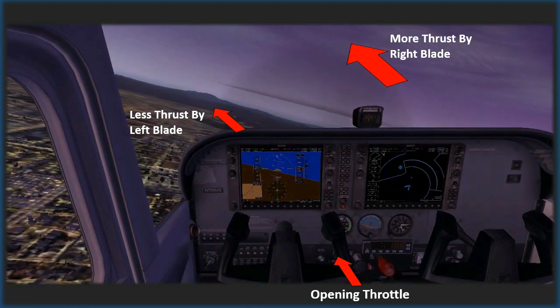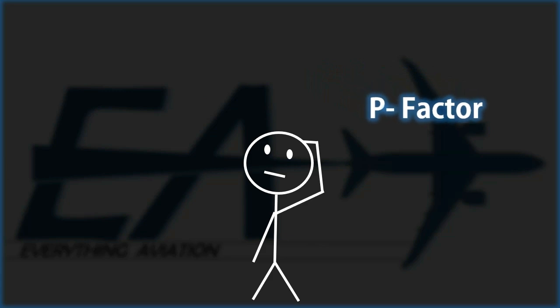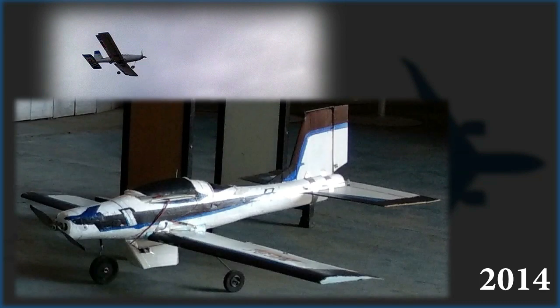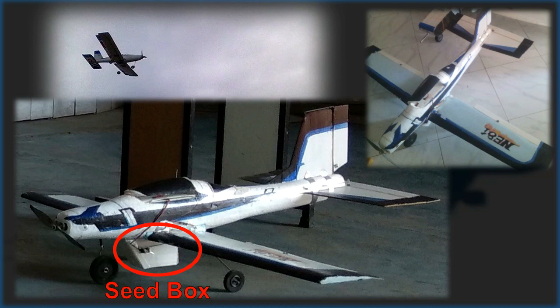If this theory flew above your head, let me explain in a better way with my retired radio-controlled aircraft. This was made by my brother, who is an A320 pilot now. We named it Cedar, because we used it to drop seeds during rainy seasons over barren lands. Cedar is 6 years old, so its paint has faded. Anyway, back to the P-factor.